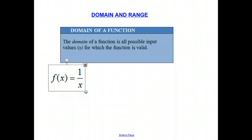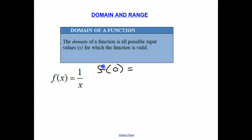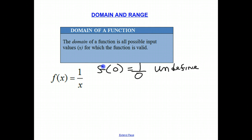You cannot put 0 for x. If I were to put 0 for x, so f of 0 means we would have 1 over 0. Most of you know that this is an undefined function — you are not allowed to divide by 0 in any fraction.